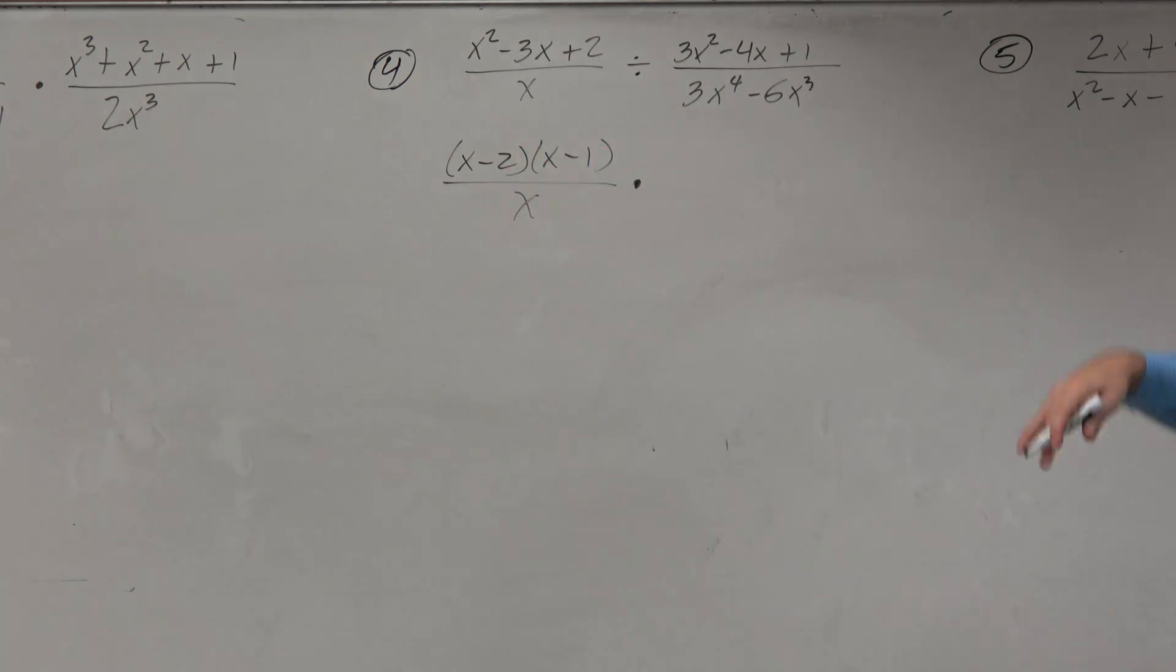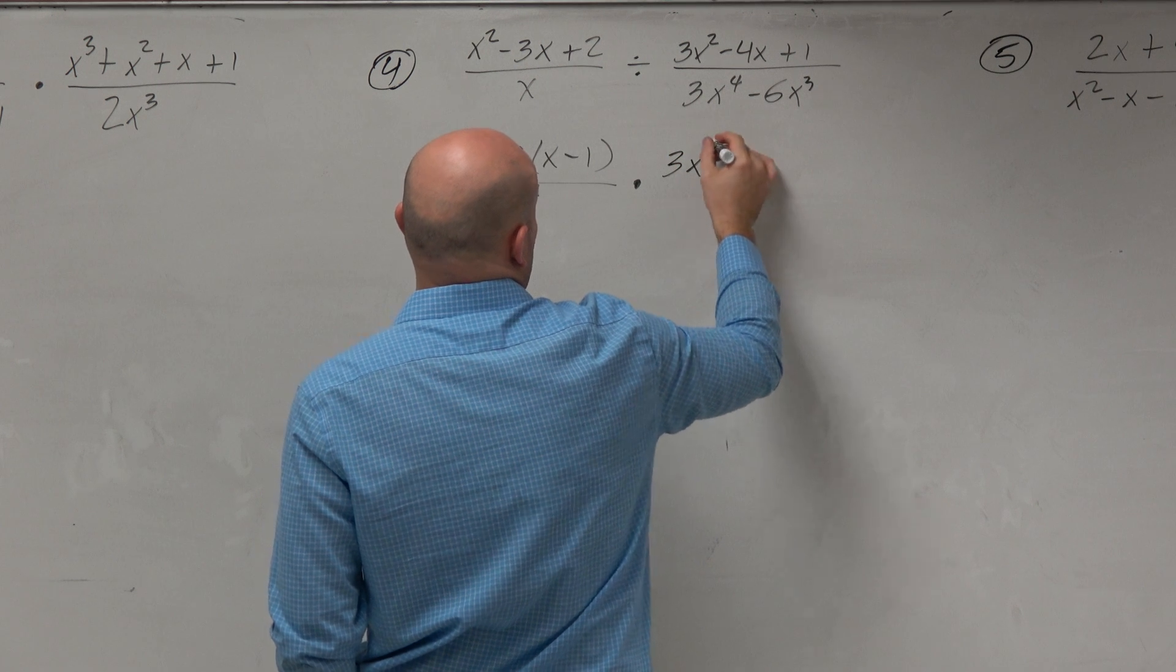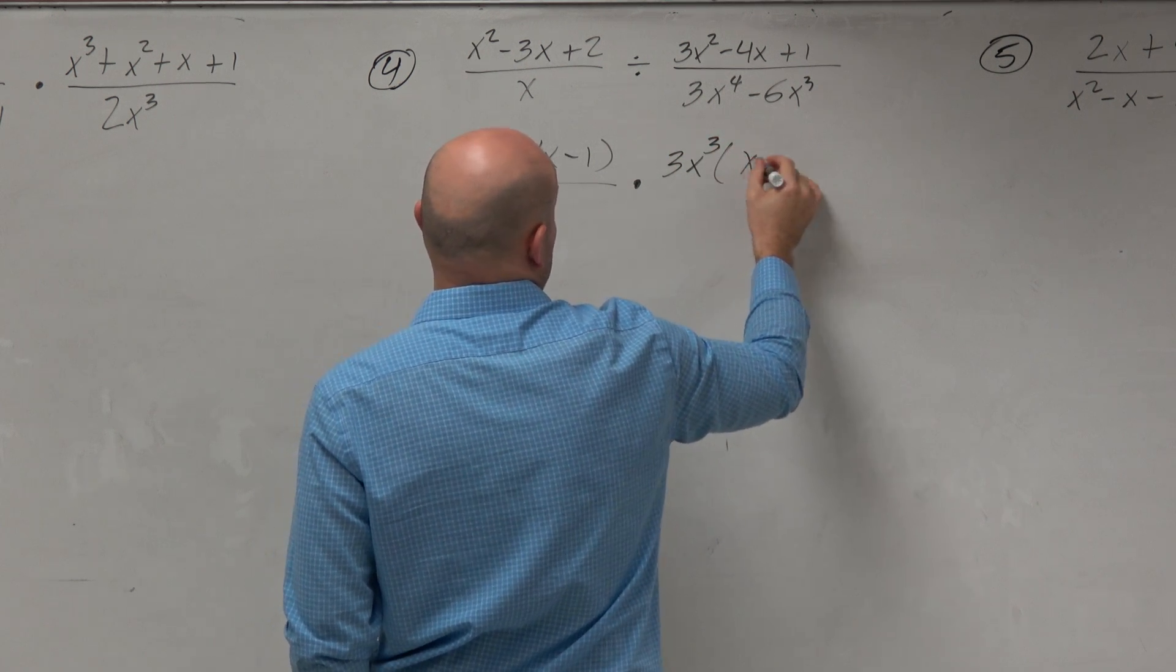I can rewrite this now as a multiplication problem. I'm going to factor out a 3x cubed, I'm sorry, to leave me with an x minus 2.